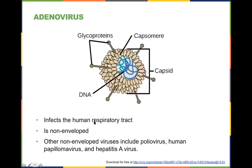Adenovirus infects the human respiratory tract — it's not enveloped. Other non-enveloped viruses include poliovirus, human papillomavirus, and the hepatitis A-type virus. We don't expect you to figure out what each of these is doing, but if you want to be completely fascinated by how mother nature can literally turn you into a meal, you should go take a look at some of these.